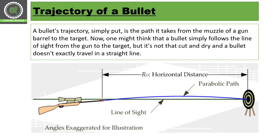This is your muzzle end. This is your gun's barrel — we call this the barrel. And this end is the muzzle. And here the bullet is fired.